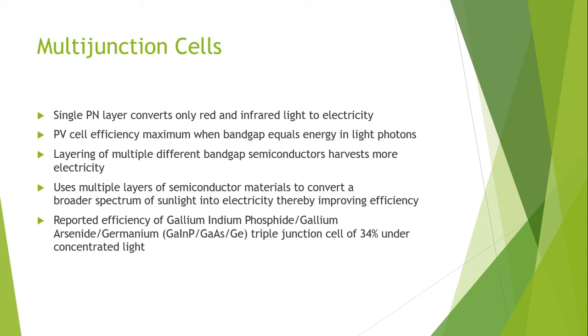Reported efficiency of gallium indium phosphide, gallium arsenide, or germanium based semiconductor solar cell triple junction cell of 34% is recorded under concentrated sunlight.